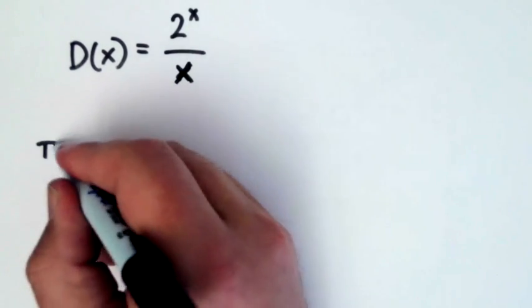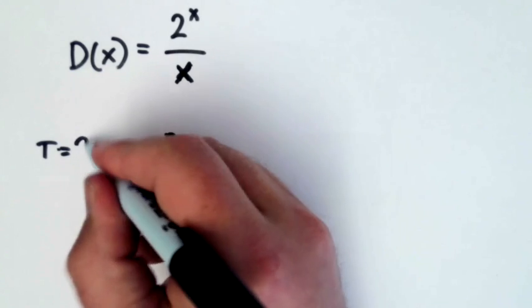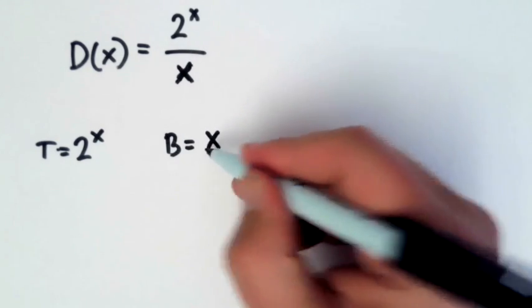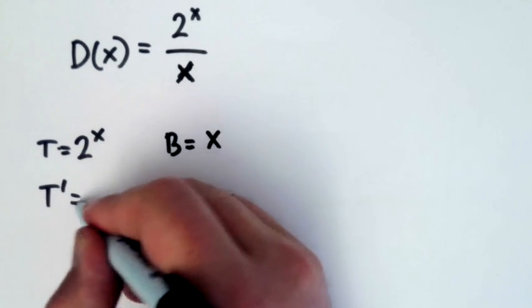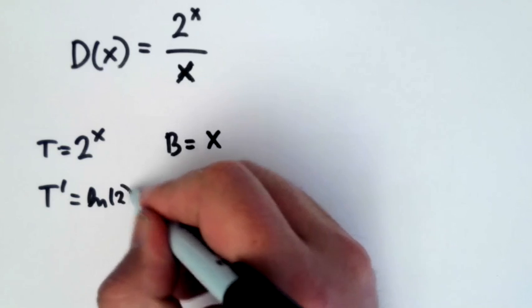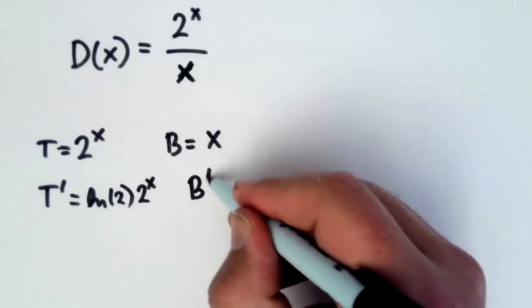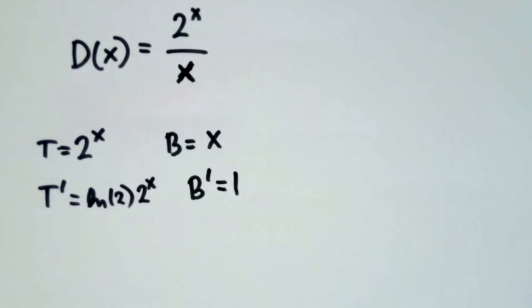So I'm going to do my top and my bottom. My top is 2 to the x, and my bottom is x. So my T prime will be natural log of 2 times 2 to the x, and my B prime will be equal to 1. Do you agree?